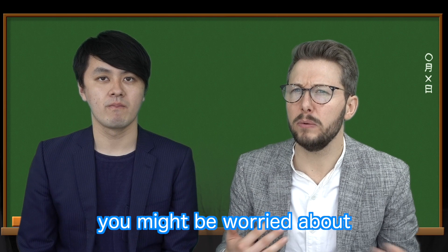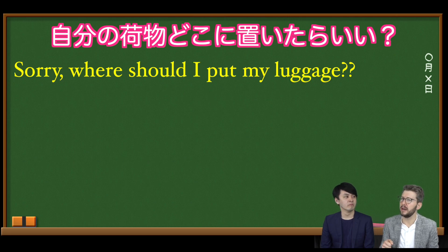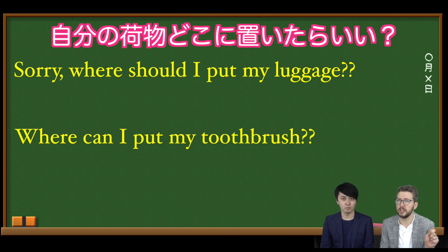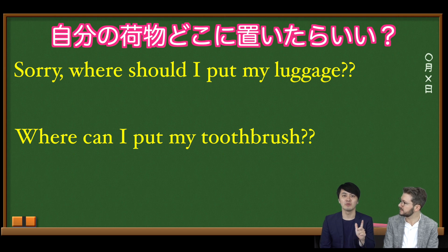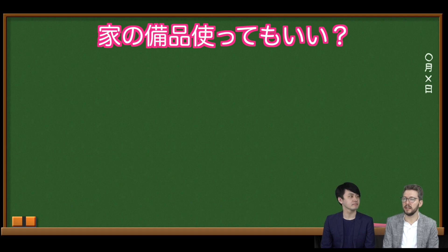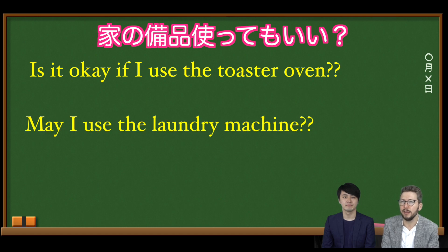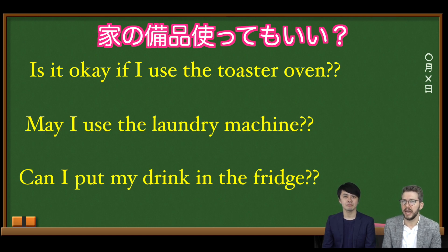When you first arrive at your homestay, you might be worried about where to put your things. It'll be useful to ask: 'Sorry, where should I put my luggage?' or 'Where can I put my toothbrush?' If you want to use something in your homestay — like a bread machine, microwave, or space in the refrigerator — you should ask: 'Is it okay if I use the toaster oven?' or 'May I use the laundry machine?' or 'Can I put my drink in the fridge?'